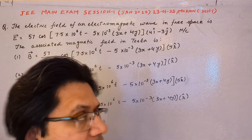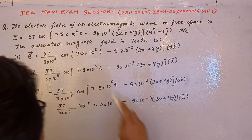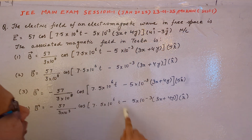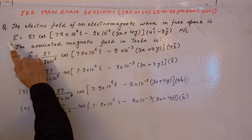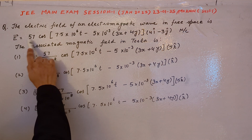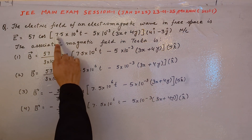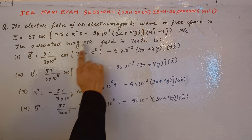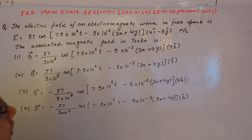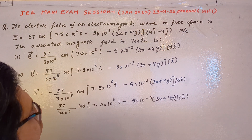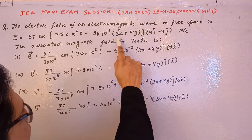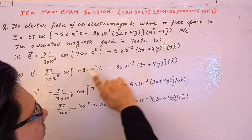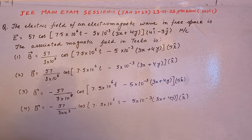Hello students, the question is: the electric field of an electromagnetic wave in free space is E equals to 57 cos(7.5×10⁶ t minus 5×10⁻³ (3x + 4y)) times (4i minus 3j) newton per coulomb.